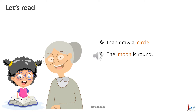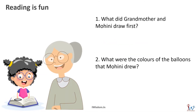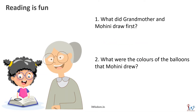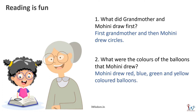Read the following sentences: 'I can draw a circle. The moon is round.' Well done. Now answer these questions: What did grandmother and Mohini draw first? First grandmother and then Mohini drew circles. What were the colors of the balloons that Mohini drew? Mohini drew red, blue, green, and yellow colored balloons. Both of you answered well.